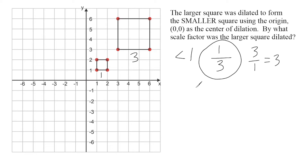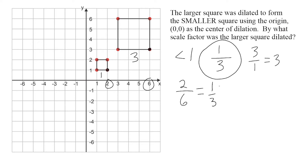Not only can you use corresponding side lengths to determine scale factor, you can also use corresponding points as well. For example, let's take this point right here — I'm going to look at its x value, which is six. And its corresponding point has an x value of two. Because we know the scale factor is going to be less than one, I can take the smaller number, which is two, and write that on top, and the six on the bottom. Then we simplify, which also gives us one third.